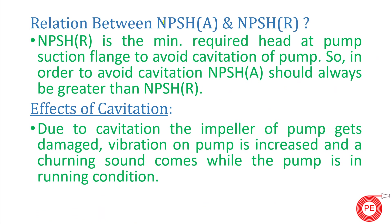The relation between NPSH available and NPSH required: NPSH required is the minimum required head at the pump suction flange to avoid cavitation. In order to avoid cavitation, NPSH available should always be greater than NPSH required. Centrifugal pumps generally face this cavitation problem if NPSH available is not calculated properly and NPSH required exceeds NPSH available. While designing a system, ensure NPSH available is greater than NPSH required.